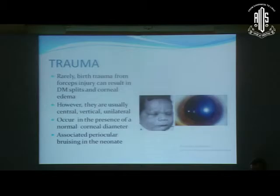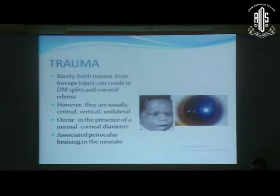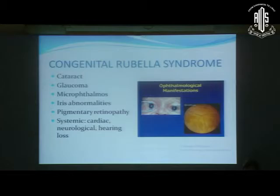Rarely, birth trauma from forceps injury can result in Descemet's membrane splits and corneal edema. These are usually central, vertical, and unilateral — in contrast to Haab's striae in congenital glaucoma, which are peripheral and concentric to the limbus. They occur with a normal corneal diameter and are associated with periocular bruising in the neonate, as most are linked to forceps injury.